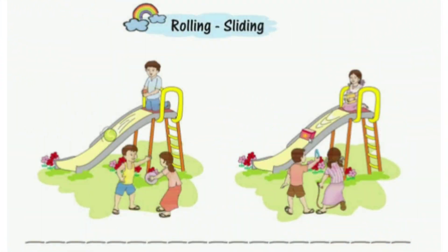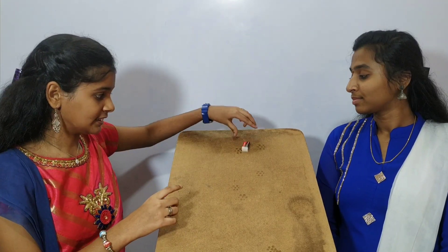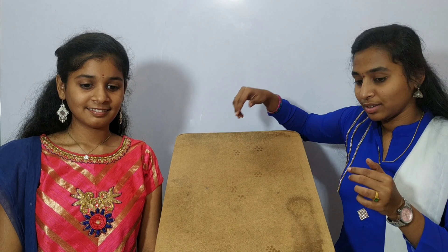Now let us get into the topic rolling and sliding. The eraser has a flat surface and it slides. The lemon has a round surface and it rolls. Hey kids, there is a small activity for you — try to identify a few items in your home which roll and slide. Now we have completely understood the topic rolling and sliding.